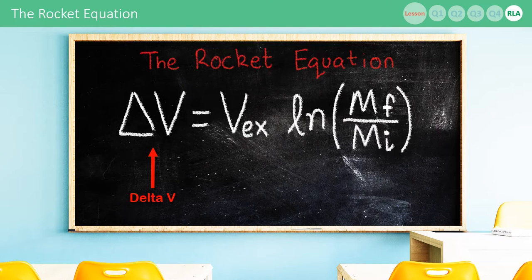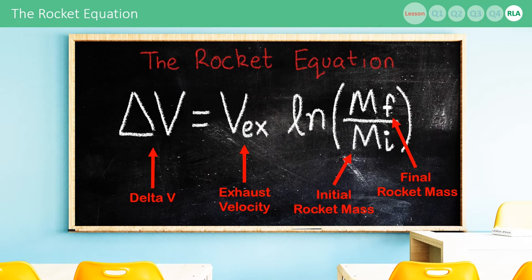A rocket's delta V is equal to its exhaust velocity times the natural logarithm of its final mass after it's burnt all of its fuel, divided by its initial mass before it's burnt all of its fuel.